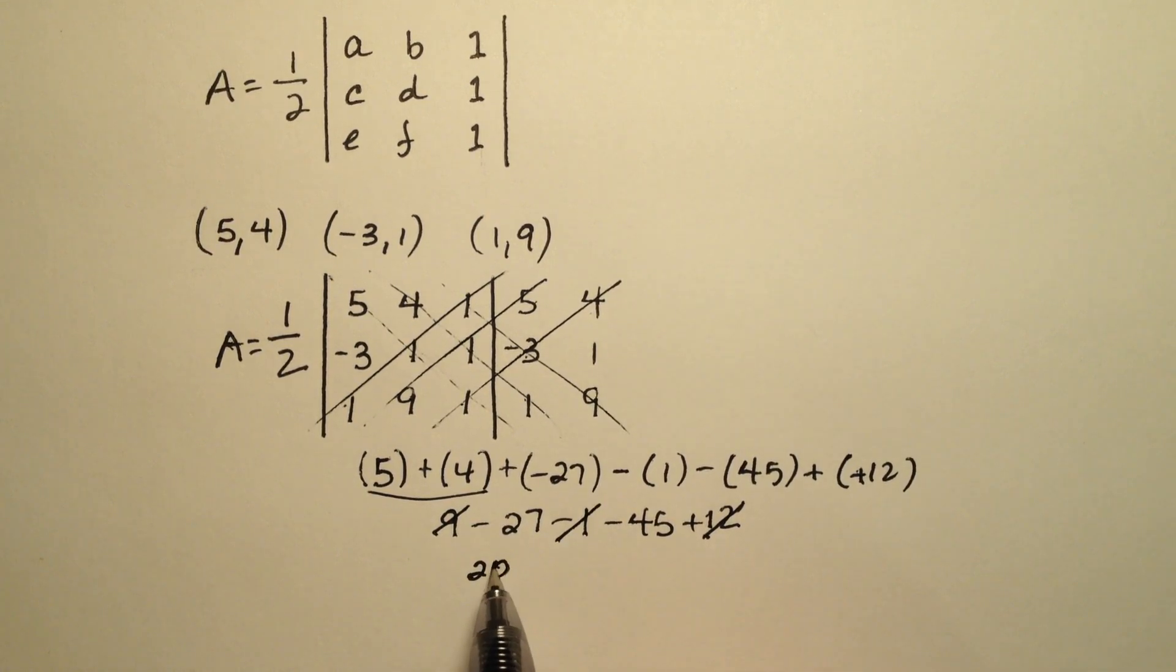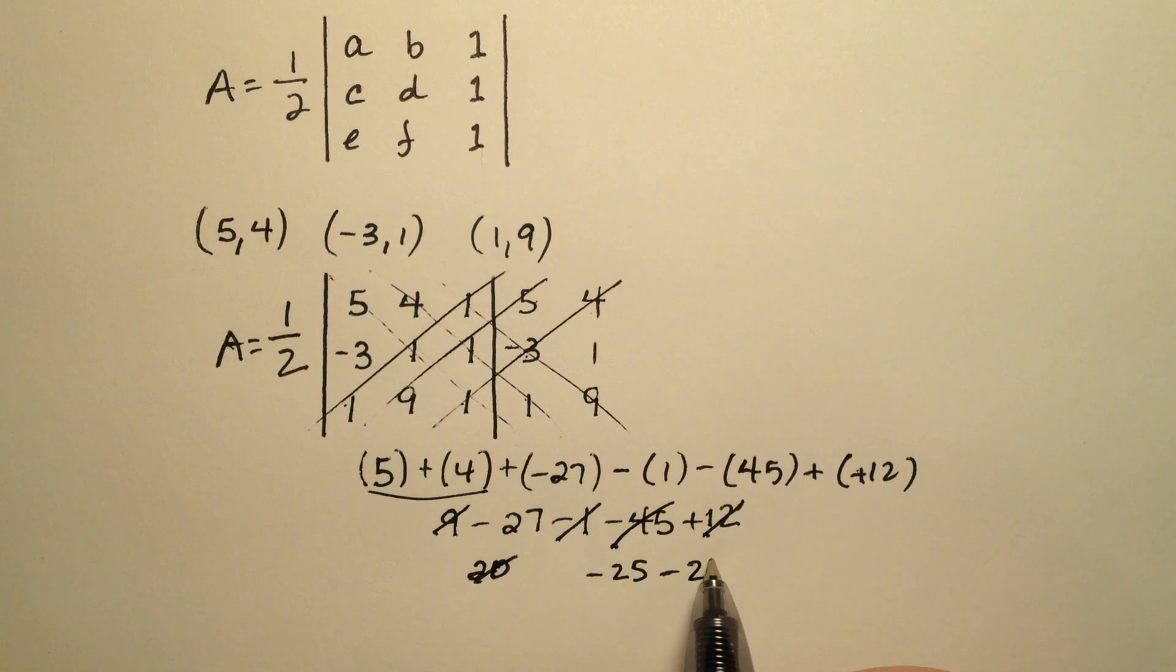21 minus 1 is 20. 20 minus 45 will be -25, and then minus 27 more will be -52.